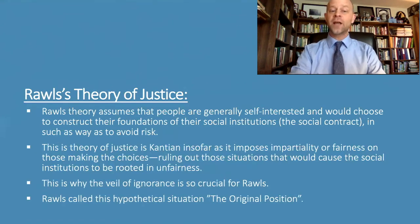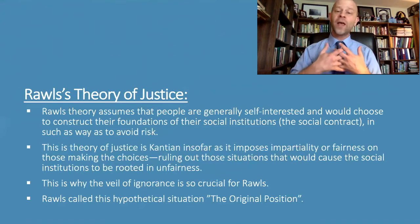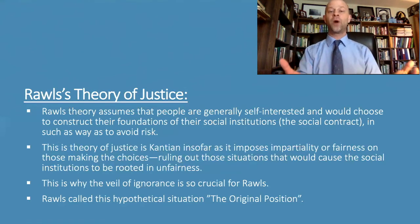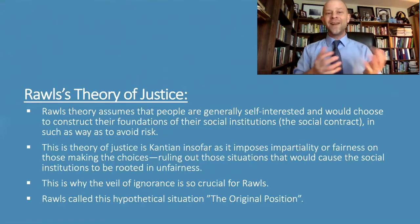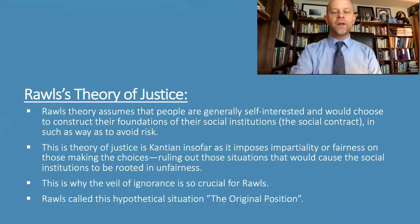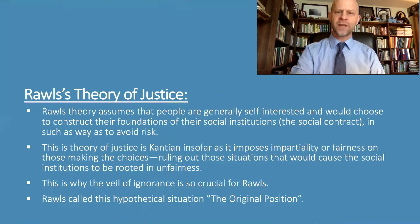This is why the veil of ignorance was so fundamental for Rawls's view. Rawls called this hypothetical situation the original position — a thought experiment where we imagine what we would do if we did not know anything about our own particular situation in life. What sort of society would we all agree to construct? What social institutions would we want in place if we did not know our position in that society? That is the original position, the bedrock thought experiment of Rawls's theory of justice.